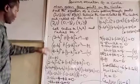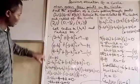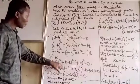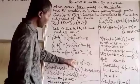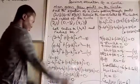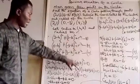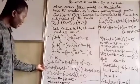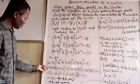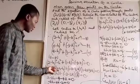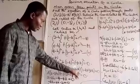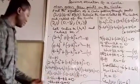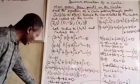Equation 2: 0 minus h squared plus minus 3 minus k squared equals r squared. Equation 3: 4 minus h squared plus 3 minus k squared equals r squared. Now let's subtract equation 2 from equation 1. Using the difference of two squares, I was able to get h plus 2k equals minus 1. I did the same thing subtracting equation 2 from equation 3: using difference of two squares I got 16 minus 8h minus 12k, and dividing by 4, I got 4 minus 2h minus 3k, so 2h plus 3k equals 4.